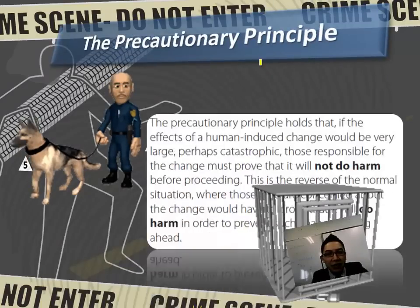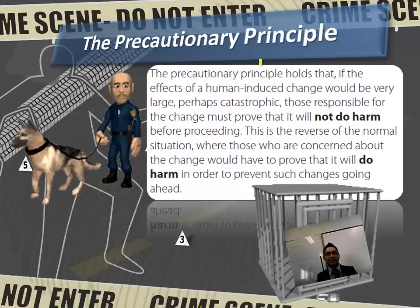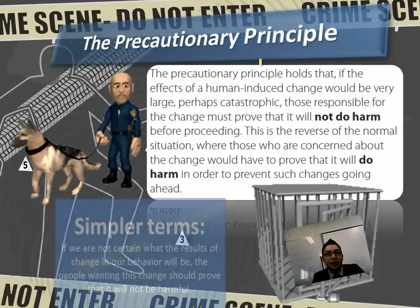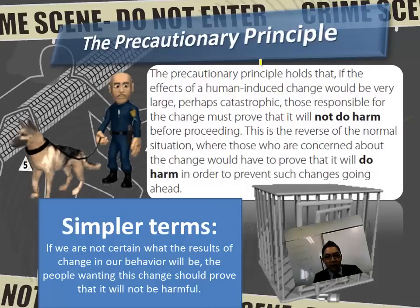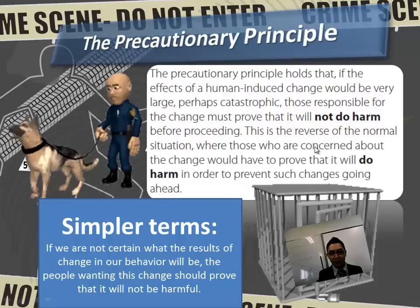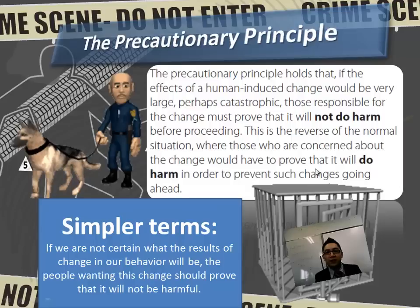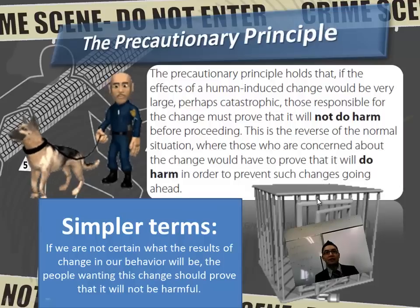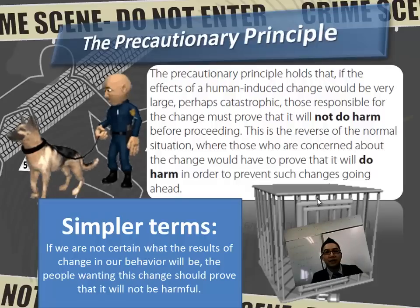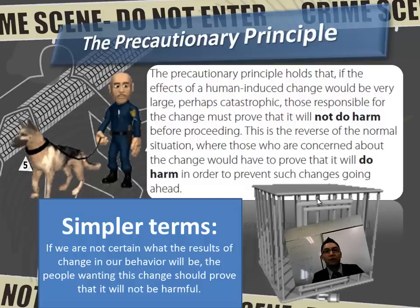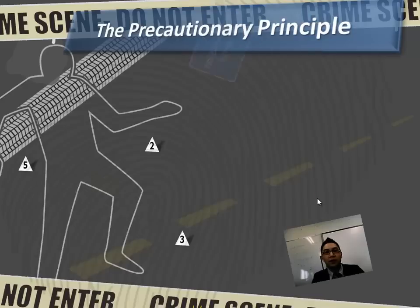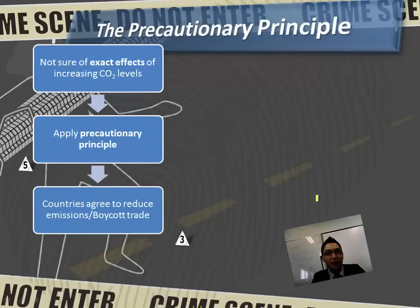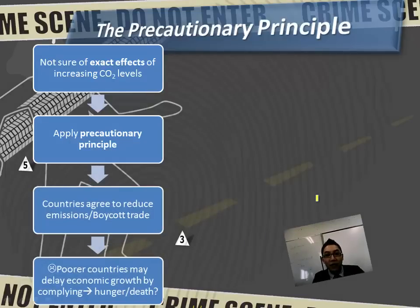Something really important: the precautionary principle. It can be linked to Theory of Knowledge and could be a whole in-class debate. In simple terms, if we're not certain about the results of our behavior, the people who want the change should prove that it will not be harmful. This is different from the normal situation where those concerned about the change would have to prove it will do harm. Think of how this applies to the tobacco industry — whose job is it to prove cigarettes are or aren't harmful? As applied to the greenhouse effect: if you're not sure of the exact effects of increasing carbon dioxide and you apply this principle, action follows.